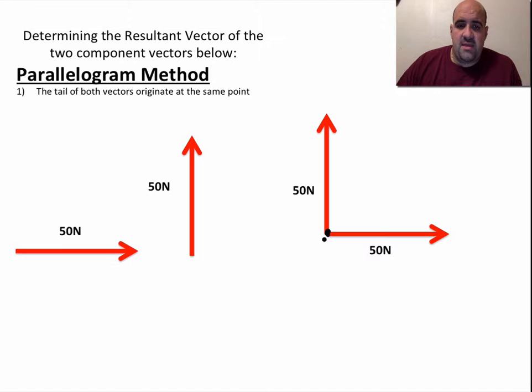You simply take the tail of both vectors, and they originate at the same point. All you do is basically take this vector, put it here, and this originates at the same point. You draw in a parallelogram. You just draw in dashed lines to where they connect, and your resultant's actually just going to go from here to here.